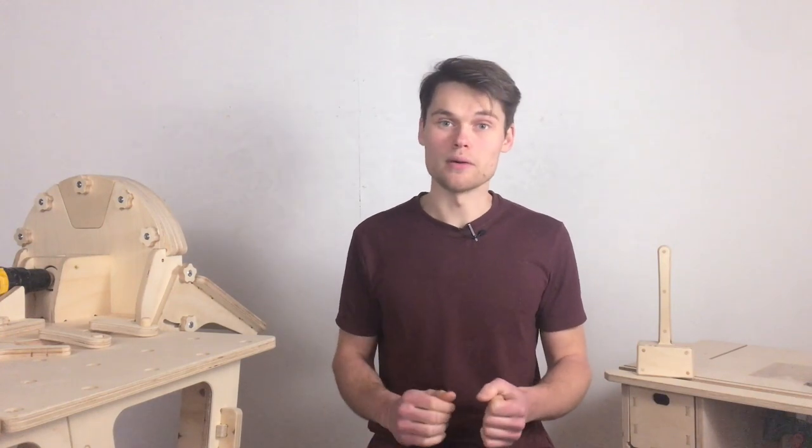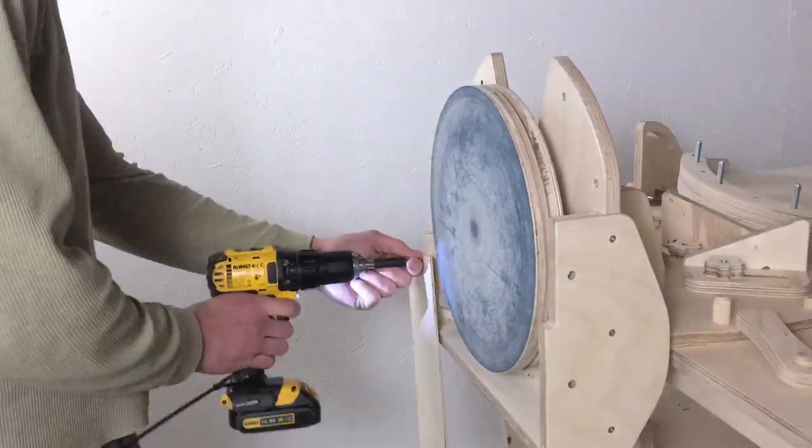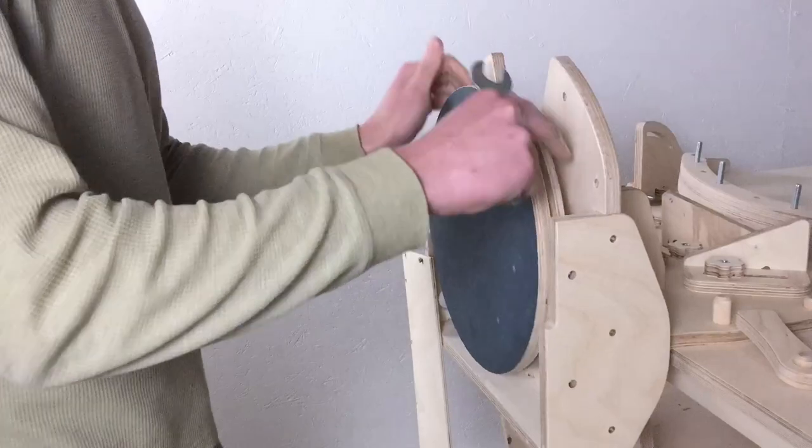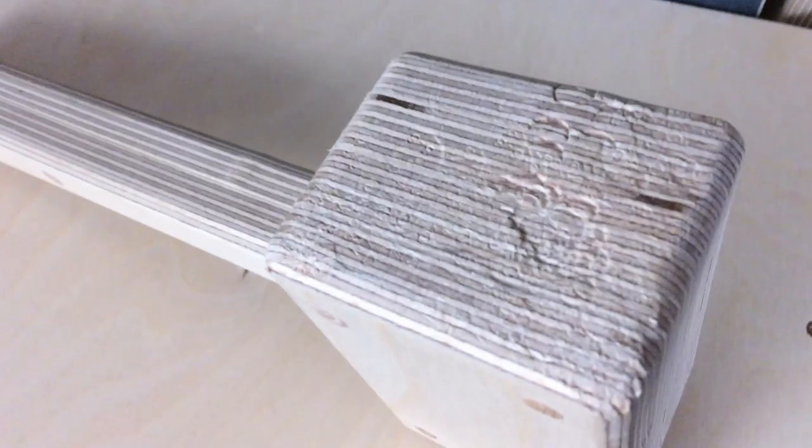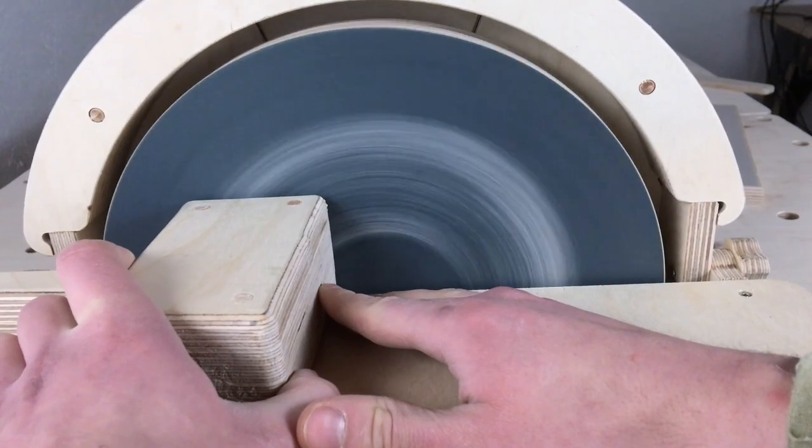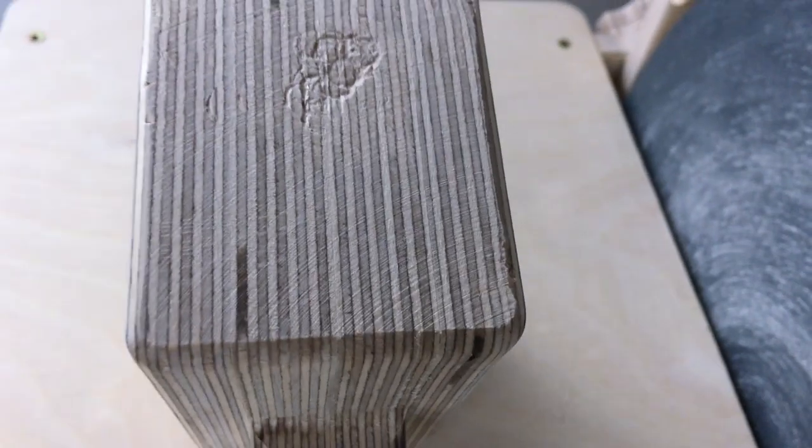So I decided to change the sandpaper disc to a rubber one. To do so I had to remove the work surface, the top cover and the front panel. Then I could remove the 120 grit sandpaper disc and replace it with an 80 grit disc. To test it out I wanted to smoothen our mallet head that had screw marks left on it from when we hammered the axis screw. And it worked.